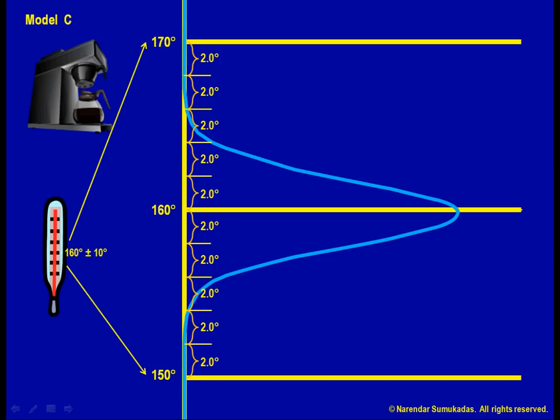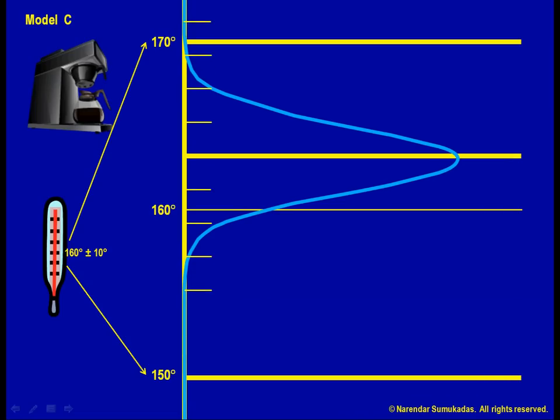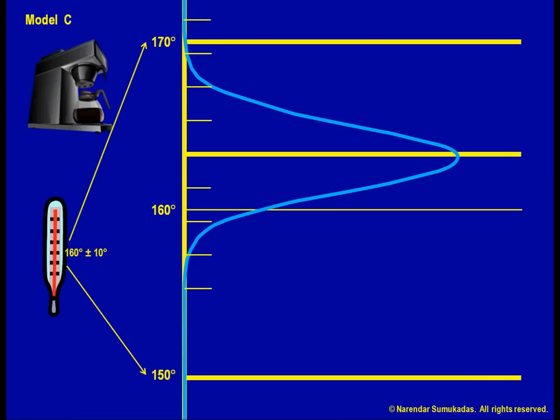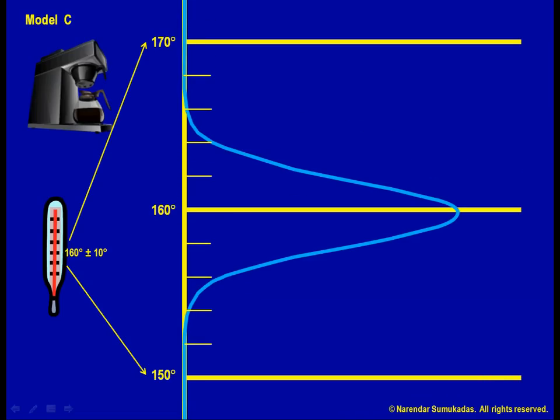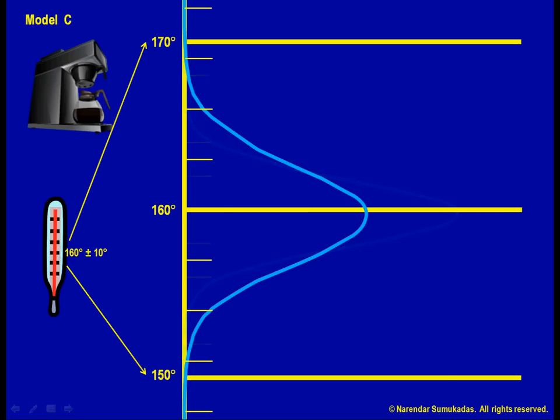As long as the process continues to behave the same way, I can be confident that I will be producing only one defect in 2 million. But what if the average temperature changes and is no longer 160 degrees? Or what if the variability of the process changes and the standard deviation is no longer 2 degrees?